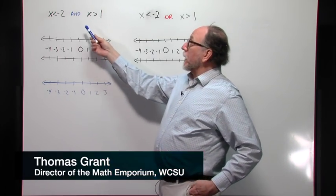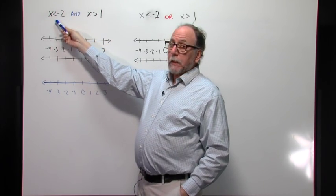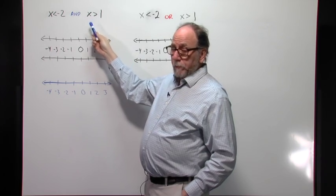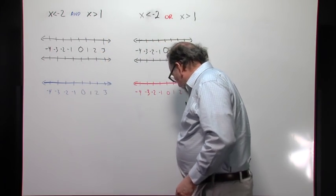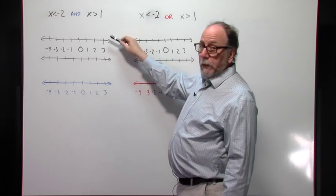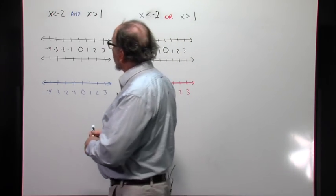Again, we have an intersection here of x is less than negative 2 and x is greater than 1. Okay, and I'm going to graph these two statements separately on the black number lines here.